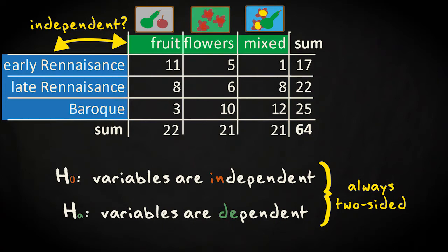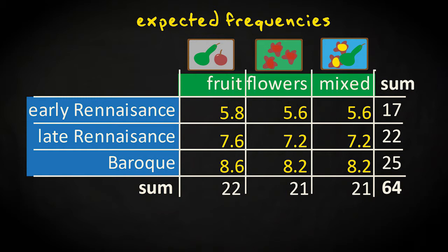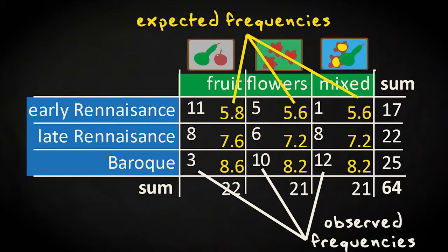If the variables were independent, we could calculate the joint frequencies by multiplying the marginal frequencies, and then dividing by the overall sample size. Let's do that here. So, if these expected frequencies deviate a lot from the observed frequencies, this points at some discrepancy between what we expect under the null hypothesis of independence and reality.